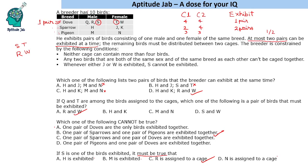One more thing to note: if we do not select S, we can have two dove pairs exhibited — for example Q and T, or R and W. So one pair of dove is possible and two pairs of dove are also possible when S is not selected. We need at least one dove pair to be exhibited. That was the solution to this set — I hope you loved solving it. If you liked the explanation, please do like the video.